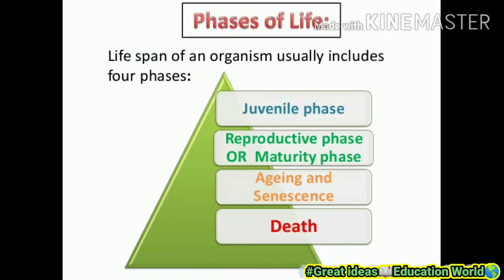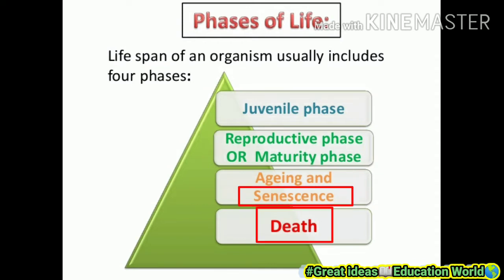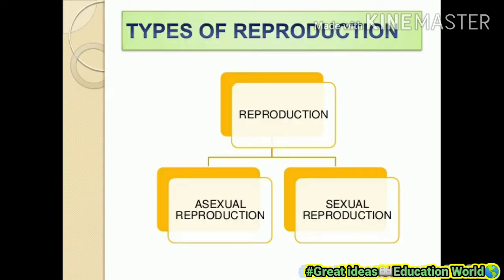Next, we understand the phases of life span. The life span of an organism usually includes four phases: the juvenile phase, the reproductive or maturity phase, aging and senescence, and death. The juvenile phase begins at birth. In the reproductive or maturity phase, any organism reproduces its own offspring. Then comes aging and senescence, and lastly death, where the organism converts into organic material.